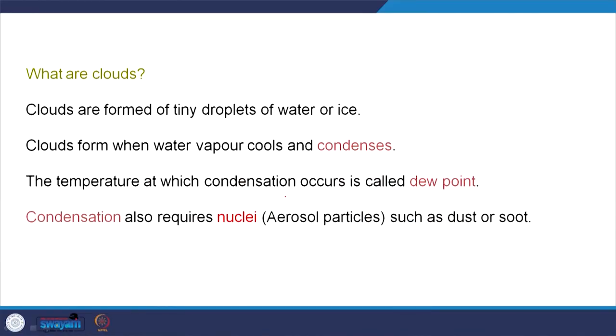Clouds are formed by tiny droplets of water or ice. Depending on the height of the cloud, it can be made up of ice droplets. At very high altitudes the temperatures are very low, so water vapor may actually freeze and form tiny crystals of ice. At around 10 kilometers or lower, clouds are generally made up of tiny droplets of water. Clouds form when water vapor cools and condenses.